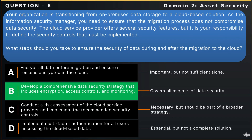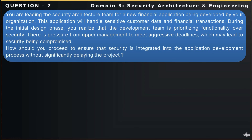Let us now move on to our next question. You are leading the security architecture team for a new financial application being developed by your organization. This application will handle sensitive customer data and financial transactions. During the initial design phase, you realize that the development team is prioritizing functionality over security, and there is pressure from upper management to meet aggressive deadlines, which may lead to security being compromised. How should you proceed to ensure that security is integrated into the application development process without significantly delaying the project?